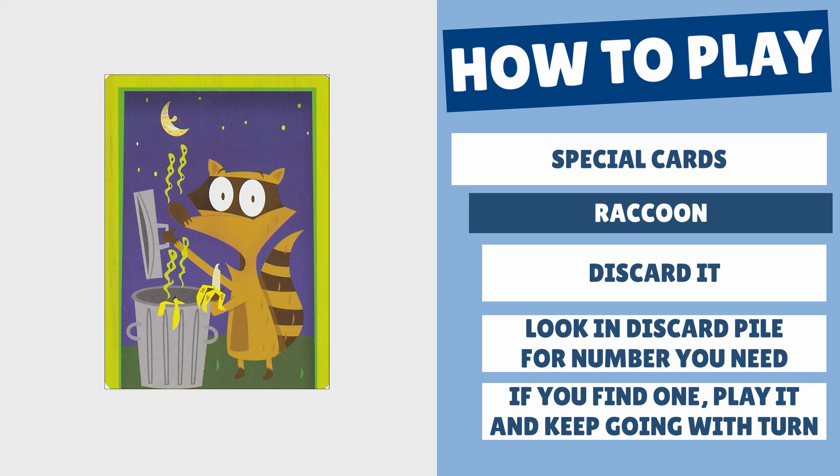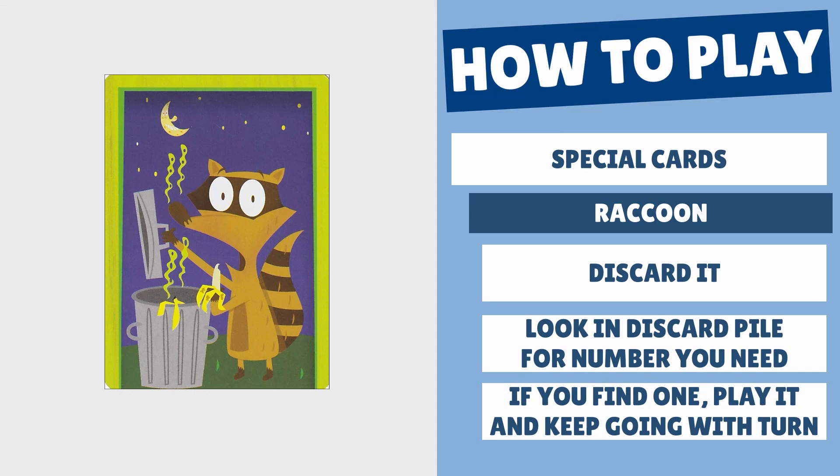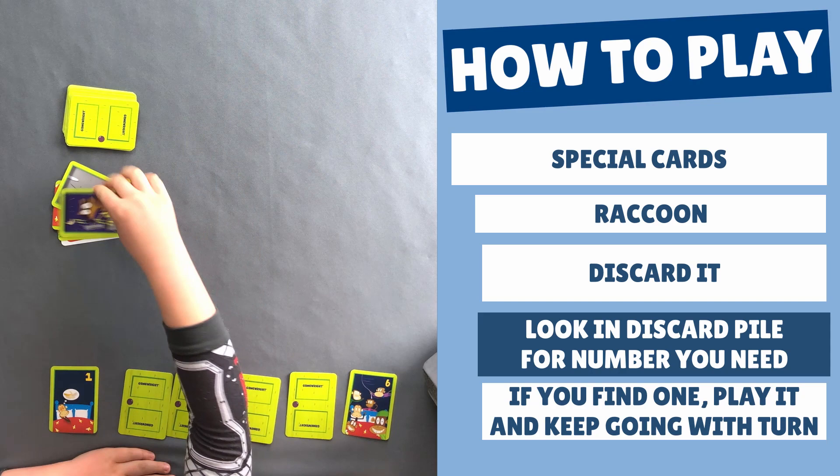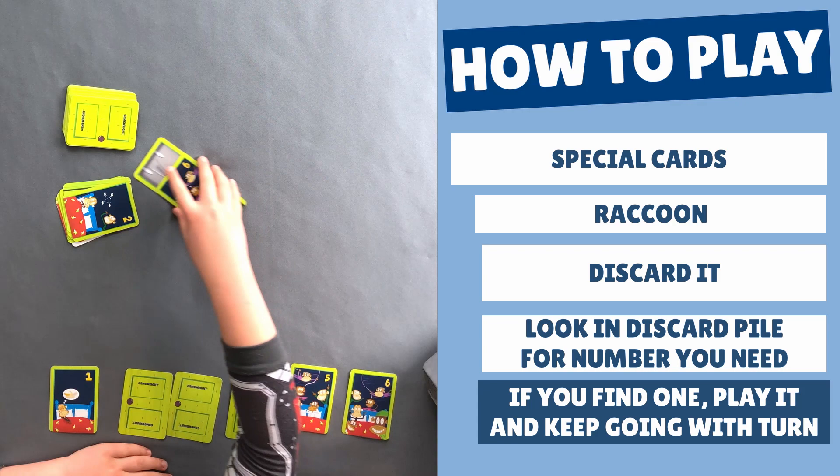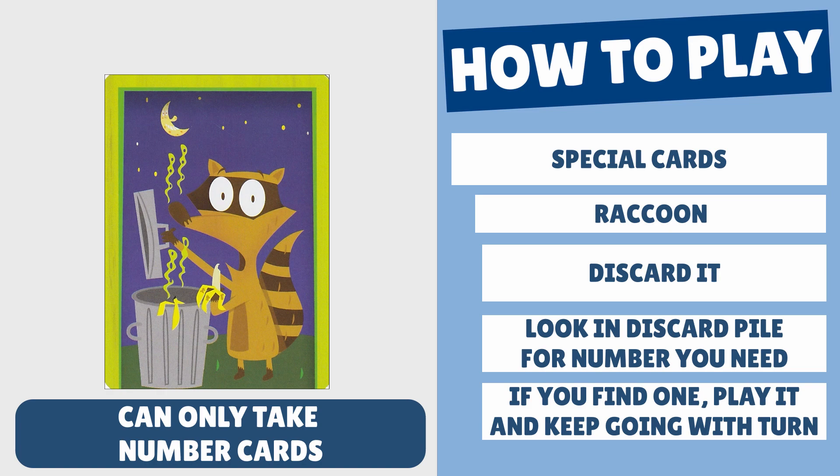If you get a raccoon card, discard it and look through the discard pile for any number you need. If you can't find a number you need, your turn is done. But if you do find one, play it and keep going with your turn. And do not forget, the raccoon can only take number cards.